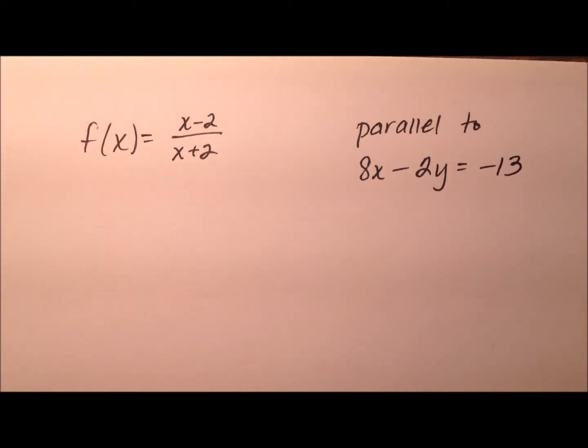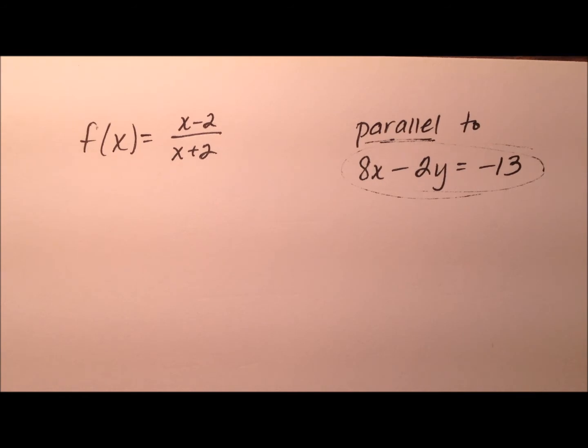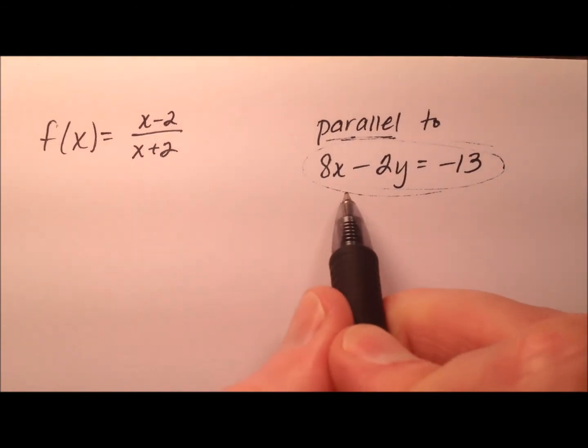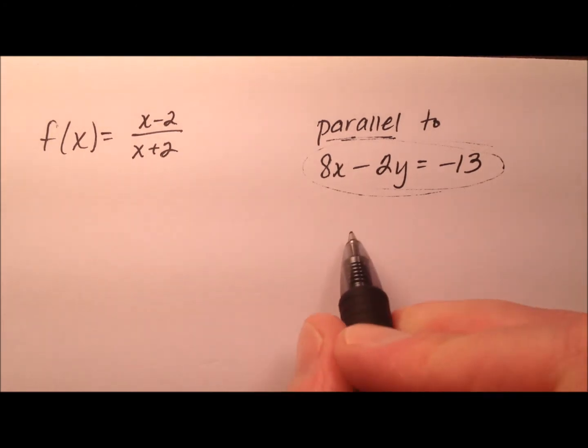Okay, so parallel, first of all, means that they're going to have the same slope. So we need to go ahead and find the slope of this line so we can do the rest of the problem. So in order to find the slope, probably the best thing to do is to write this in slope intercept form and then we can just grab the slope right from the equation.